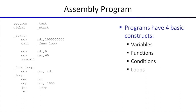Let us now look at an assembly program and see what we can tell from it. Any program generally has a few basic constructs: variables, functions, conditions, loops. On this program, are we able to identify those? Assembly is not an easy language to understand, but once you start understanding it, all the program constructs you find in regular programming languages you will be able to identify here. Today we will go into an assembly program and our goal will be to understand what it is doing.